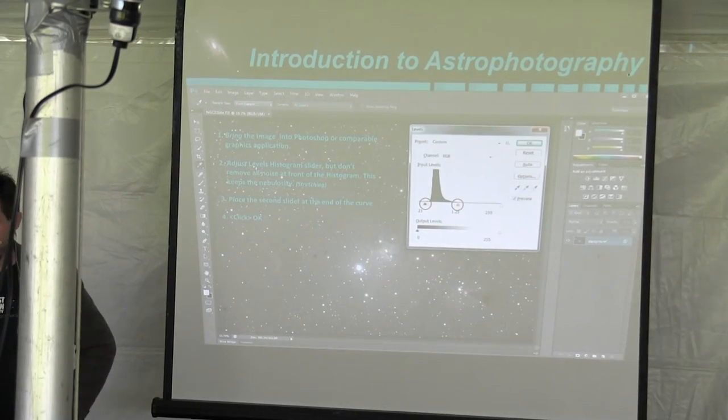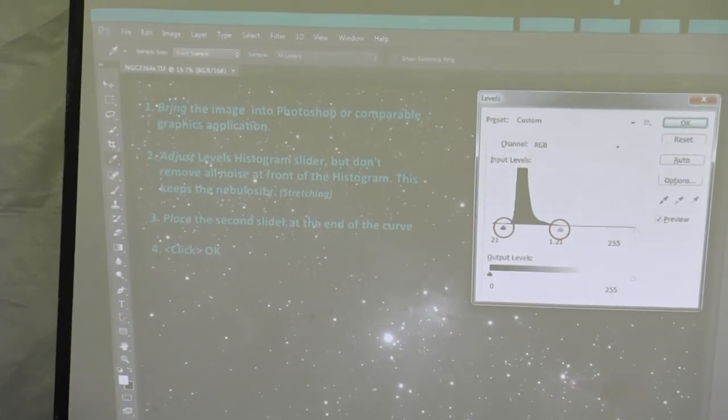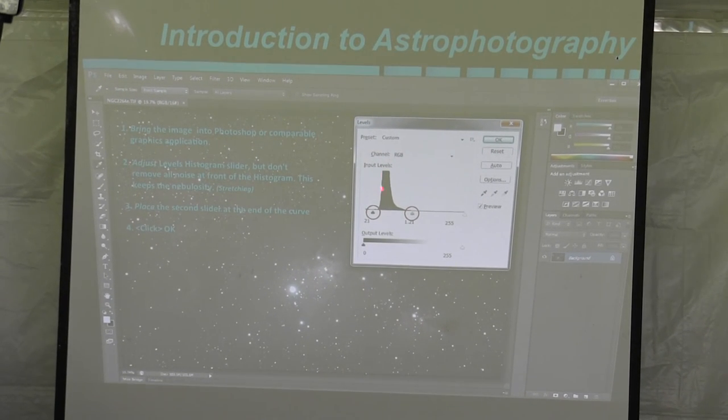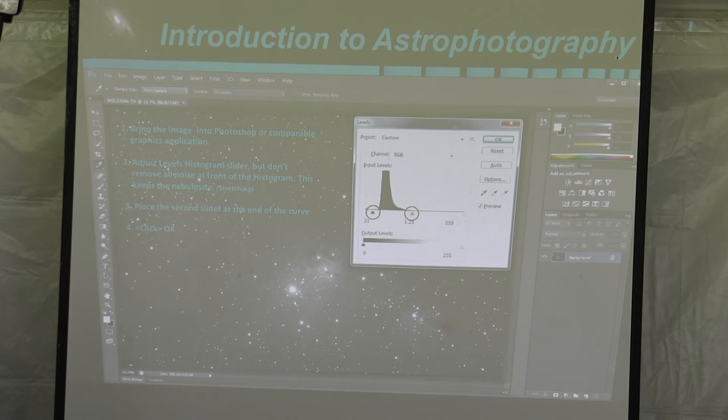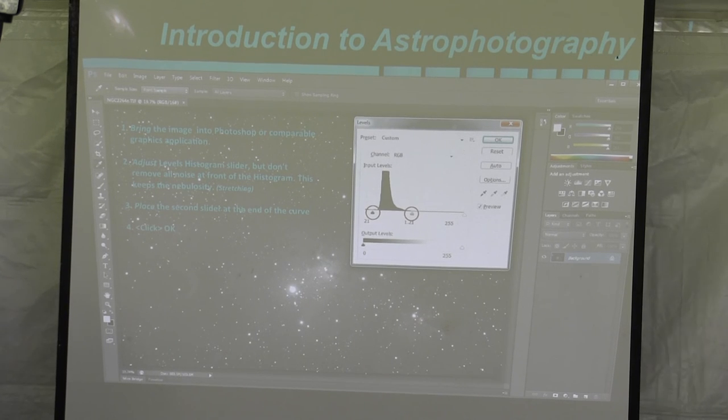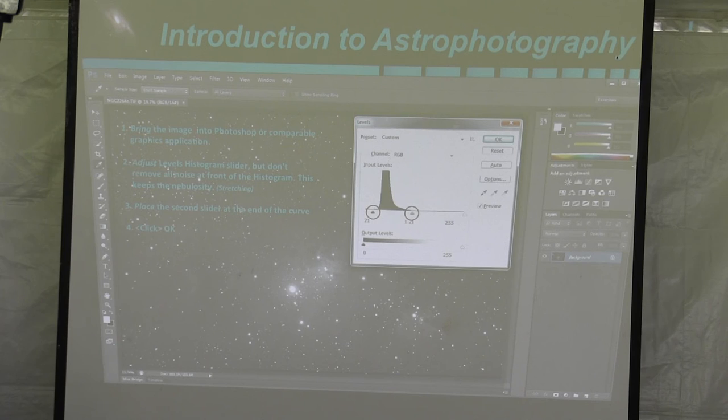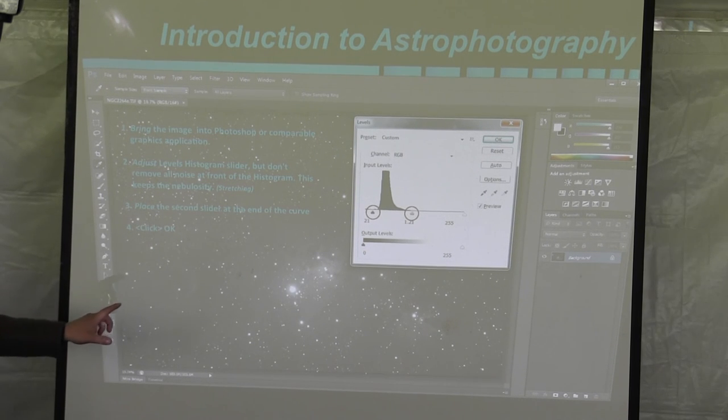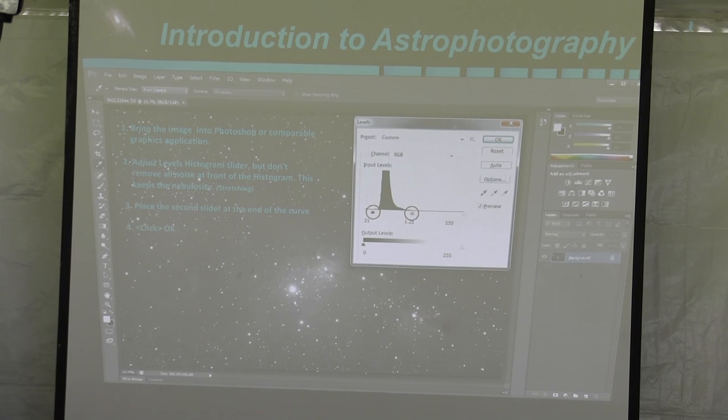So this is an example that I put together of how to bring this all together with the histogram. Here in the front here is where most of your ambient noise is. You wanna get rid of it, but not all of it. Once you use Registax or Deep Sky Stacker to create your picture, you're gonna get a TIFF. You take that TIFF, you bring it into your application. And the first thing you're gonna see is, it's gonna look black and white. It's gonna look horrible. Don't worry, we're gonna bring out that picture.